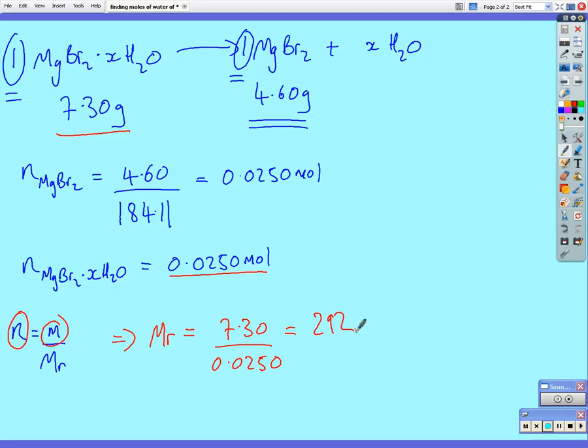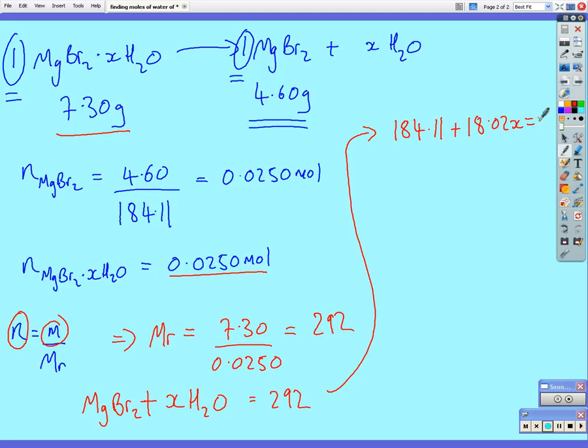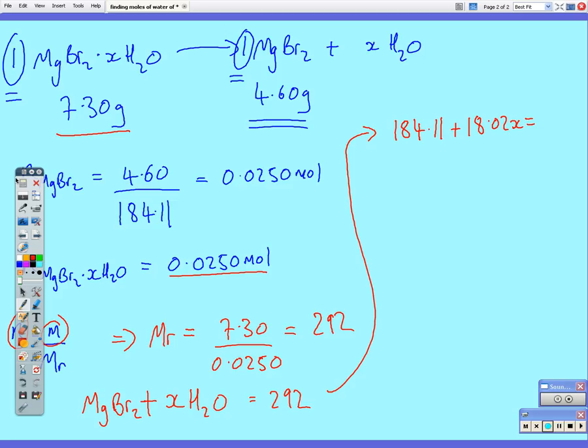So, we know the molar mass, so we can form a linear equation. Then, for the magnesium bromide plus however many moles of water in the salt is equal to 292. I'm going to move up here. Excuse me. I've run out of space. So, now we know, if we form that linear equation.